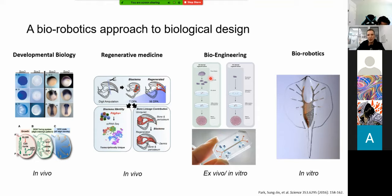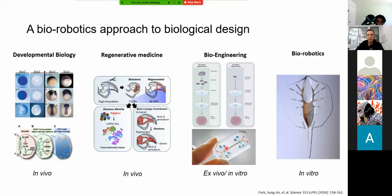Further down the line is bioengineering. There are people who are interested in, rather than working in the living system, growing organs and structures from scratch in a Petri dish. You could imagine building replacement cartilage for a knee or a heart valve outside of the patient and then transplanting that into the patient. There's been a lot of movement here in the past 10 years, and they've even done things like organs on a chip, where you have multiple different organoids present on the same interface, hooked together to understand how these organs interface with one another.